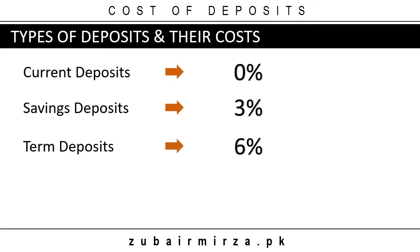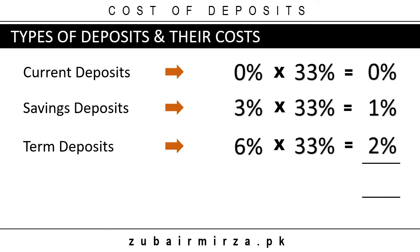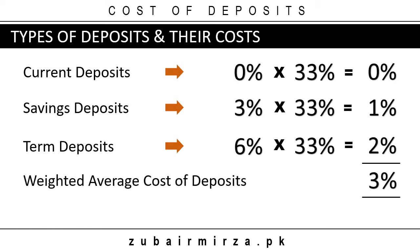Assuming an equal share of each deposit type in the total deposits of the bank — that is 33.3% for each type — the weighted average cost of funds is worked out as follows: multiply the interest rates offered on each type of deposit by their relative share in total deposits, and add the products so obtained. The weighted average cost of funds in this example works out to 3% per annum.